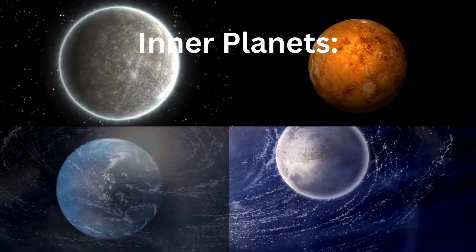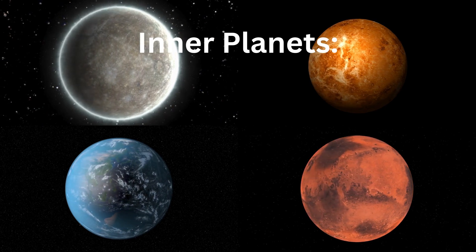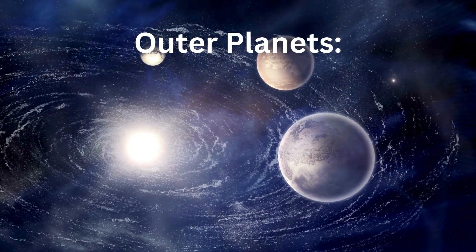Mercury, Venus, Earth, and Mars, known as terrestrial planets with solid, rocky surfaces.